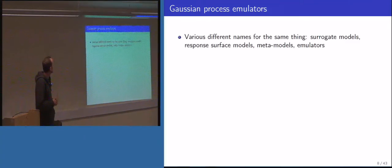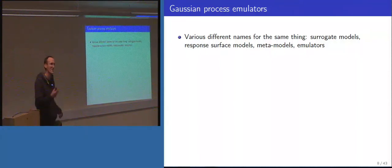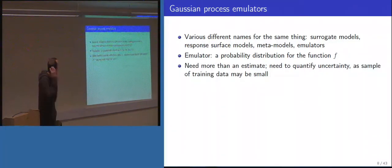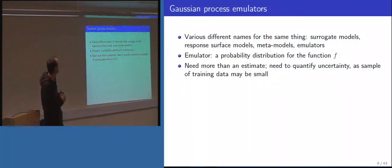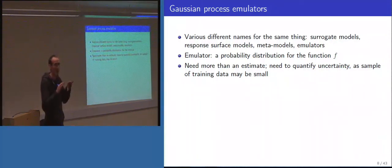Onto Gaussian process emulators. People are very good at coming up with different names for the same thing — surrogate models, response surface models, metamodels — but the word that's stuck in the community is 'emulator.' We think of an emulator as a probability distribution for the function. We don't just want to estimate the function; we're interested in quantifying uncertainty, especially with small training data samples. The emulator gives us both an estimate and the uncertainty around it.